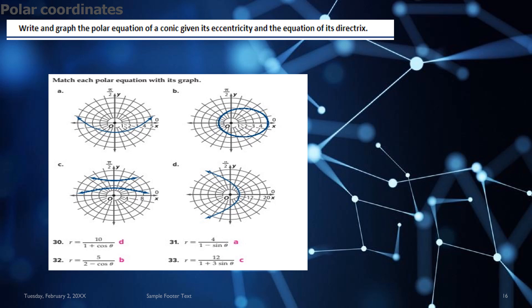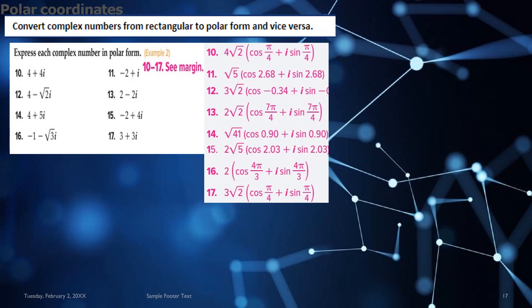Moving on, you have to match each polar equation with its graph. So the matching has been done here for question 30 to 33. And here the learning objective is to write and graph the polar equation of a conic given its eccentricity and equation of the directrix. So for question 30, the answer or the graph which is matched is D. For 31, it is A. For 32, it is B. For 33, it is E.